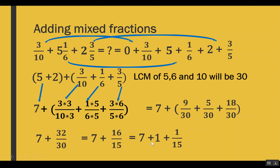We have a new whole number of 1, which we add to 7, giving us 8. Our proper fraction result is 1 out of 15, which cannot be simplified further. Combining the whole number and the proper fraction, our final result is 8 and 1 out of 15.